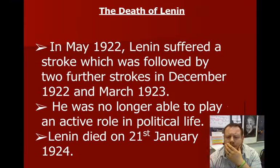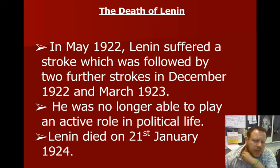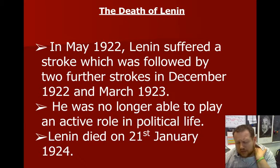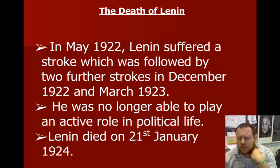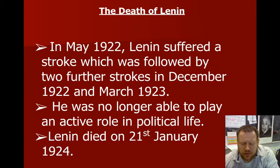That stability lasted until May 1922, when Lenin suffered a stroke, followed by two more, and he eventually died. His body was placed on display in 1924. Now you have two people — Leon Trotsky and Joseph Stalin — fighting over who was going to run the show. That takes us to the next step of the Soviet Union and what happens between the wars.